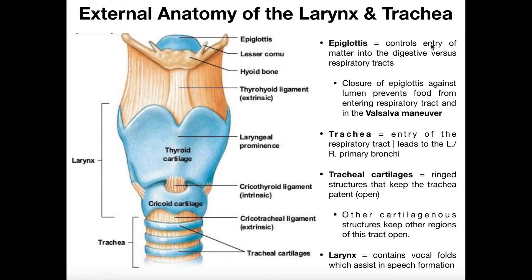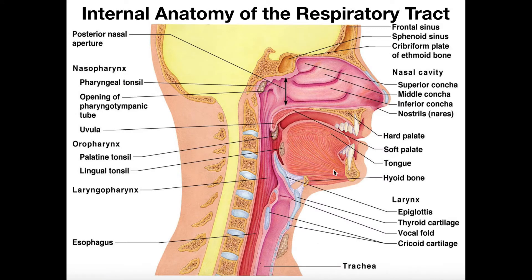The epiglottis is important because it controls entry of matter — food, drink, or air — into the digestive system or the respiratory system. If it's just air, that's easy: air simply travels through the respiratory tract, through the larynx, through the trachea, and downward. Air has no problem going into the larynx and trachea because these respiratory tracts are held patent — they're held open.